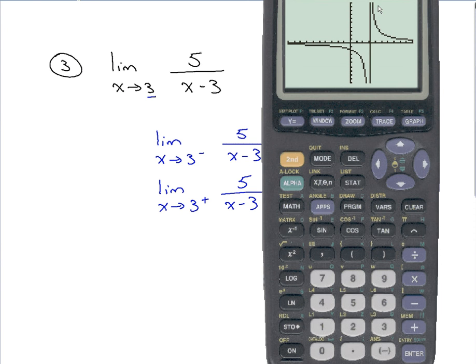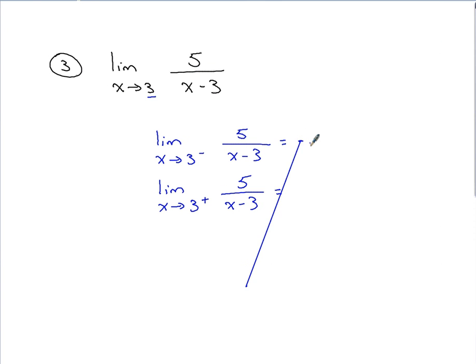So from the left, it's negative infinity. And from the right, it's positive infinity. These do not match, meaning this limit does not exist.